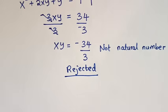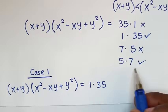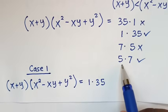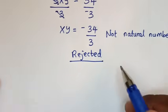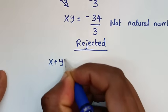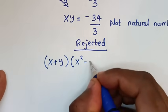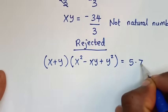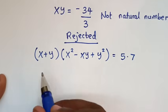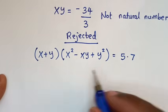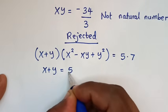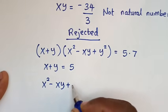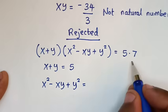Then in the next step we will solve the second case, which is x plus y times x squared minus xy plus y squared is equal to 5 times 7. So into the second case, x plus y is equal to 5, and x squared minus xy plus y squared is equal to 7.